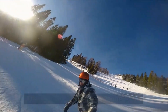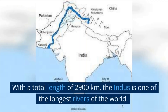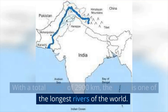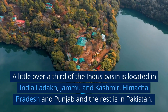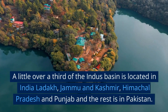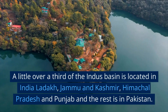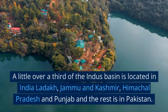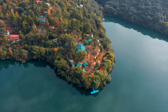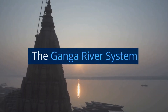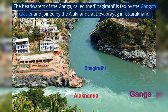Beyond Mithankot, the Indus flows southwards, eventually reaching the Arabian Sea east of Karachi. With a total length of 2,900 kilometers, the Indus is one of the longest rivers of the world. A little over a third of the Indus basin is located in India — in Ladakh, Jammu and Kashmir, Himachal Pradesh, and Punjab — and the rest is in Pakistan.